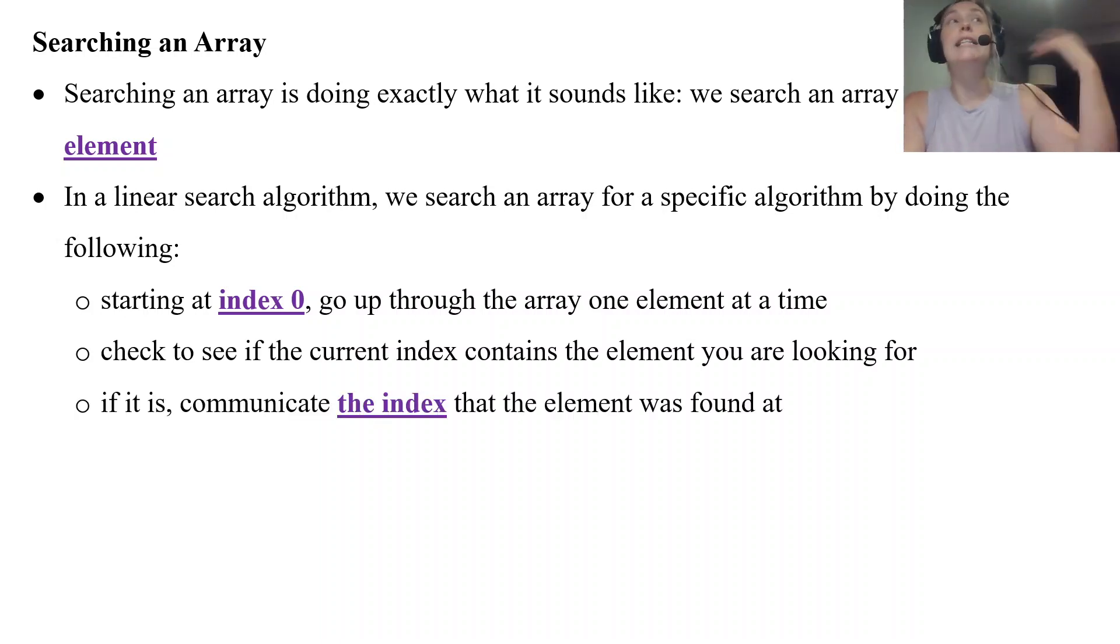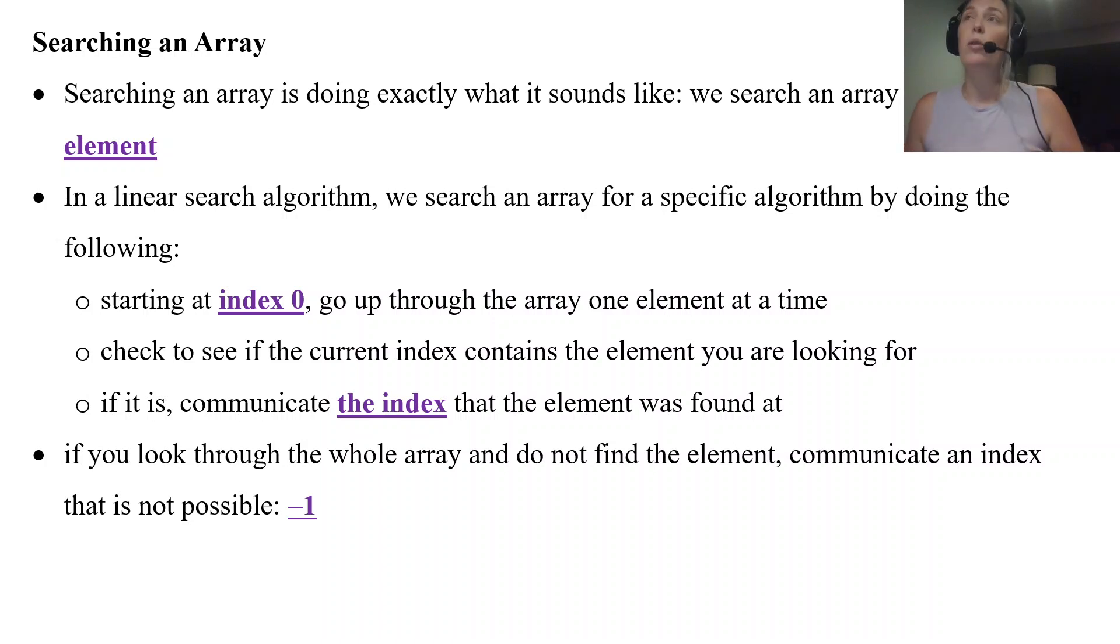If it is, we communicate the index where we found the element we are looking for. If we look through the whole array and we don't find the element, we want to communicate an index that is not possible, right? And that kind of flags it and tells whatever called the method or whatever called this segment of code that we didn't find what you were looking for. So the standard is to return a negative 1 or to communicate a negative 1 if we can't find what you are looking for.